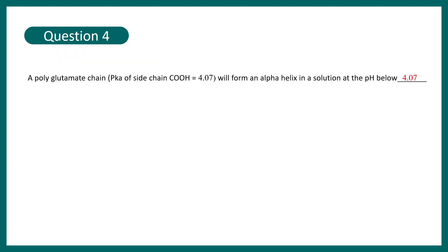Question 4: a polyglutamate chain — where the pKa of the side chain carboxyl group is 4.07 — will form an alpha helix at a pH below what? The answer is below 4.07. At pH 3 or pH 2.5, it forms an alpha helix; at pH 6, it won't. If you don't know why, go to the alpha helix lecture in the I button and learn how a charged amino acid like glutamate can destabilize the alpha helix.